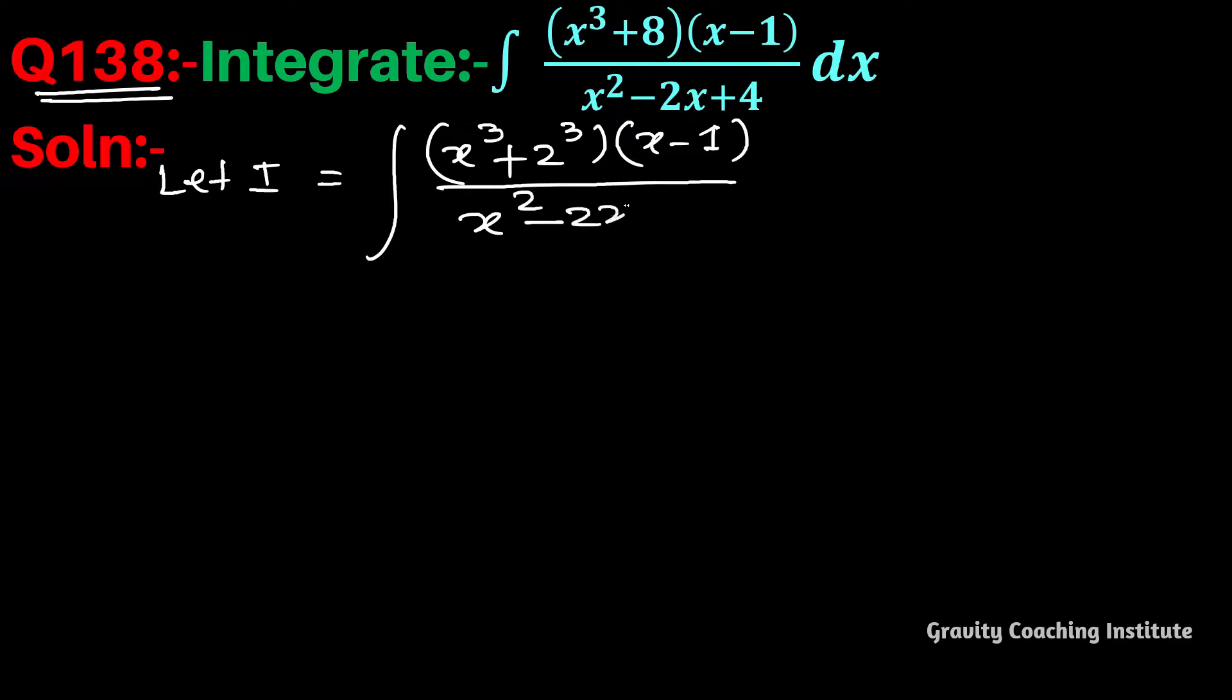We will use the a³ + b³ identity here. This will be (x + 2) into (x² - 2x + 4) into (x - 1) divided by (x² - 2x + 4) dx.